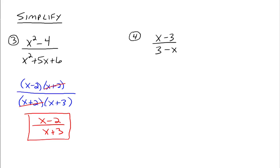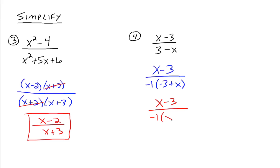Let's do one more: x minus 3 divided by 3 minus x. These are not the same thing — x minus 3 is not the same as 3 minus x — but they look really close. Remember, we can factor a negative 1 out of anything we want. We see they're opposites of each other, so from the denominator 3 minus x, factor out negative 1 to get negative 1 times (negative 3 plus x), which we can rewrite as x minus 3. Now the x minus 3's are identical and divide out.